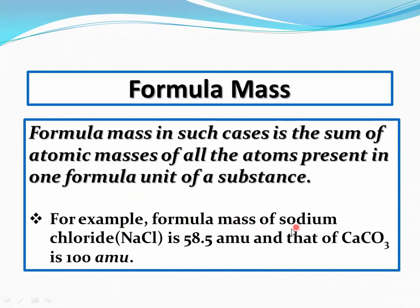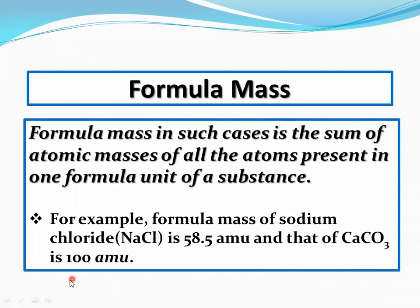For example, the formula mass of sodium chloride NaCl is 58.5 AMU — sodium has mass number 23, and adding chlorine gives 58.5 AMU. For calcium carbonate CaCO3, there are three elements: one calcium (mass 40), one carbon (mass 12), and three oxygen atoms (each mass 16). Three oxygens give 48; 48 plus 12 plus 40 equals 100 AMU. So the formula mass of calcium carbonate is 100 AMU.